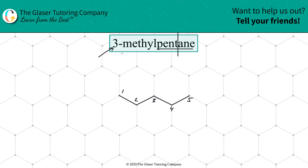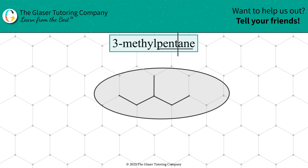So on carbon number three of the parent — let's find it — you have a one-carbon substituent. Simply add one carbon to carbon number three and go straight up. You're connecting the dots again. There's that extra carbon on carbon number three. Let's make this nice and neat, and ladies and gentlemen, there you have it — 3-methylpentane.